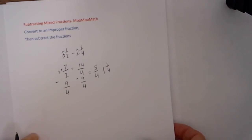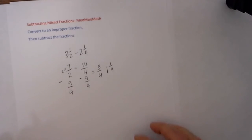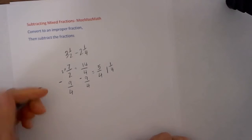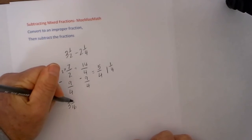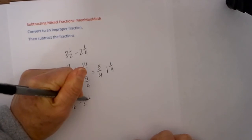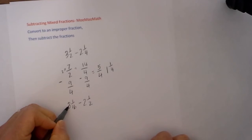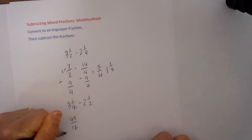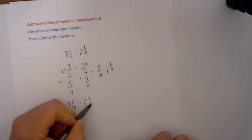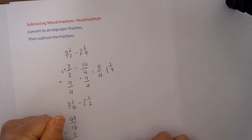So that would be my first example. Let's go ahead and look at the second example: 3 and 3/16 minus 2 and a half. The first thing I will do is convert them to improper fractions: 16 times 3 is 48, plus 1 is 49 over 16, minus 2 times 2 plus 1 is 5 halves.